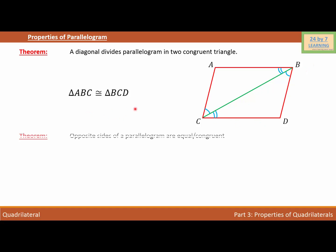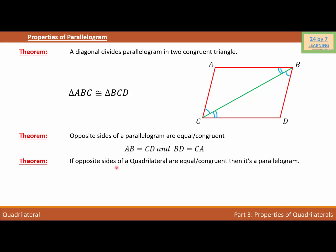The next theorem is: opposite sides of a parallelogram are equal or congruent. This simply means that AB is congruent to CD and CA is congruent to BD. So we can write AB equals CD and BD equals CA. The next theorem is the converse: if opposite sides of a quadrilateral are equal or congruent, then it is a parallelogram.